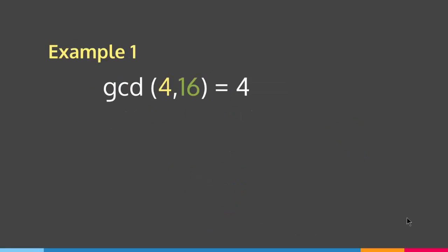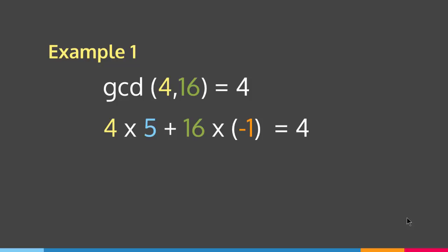Let me give you an example. Suppose a equals 4 and b equals 16. The greatest common divisor of 4 and 16 equals 4. So we have to find x and y such that x times 4 plus y times 16 equals 4. Well, I can put x=5 and y=-1. 4 times 5 equals 20, 16 times -1 equals -16, and 20 minus 16 equals 4. So this is one pair of Bézout's coefficients.